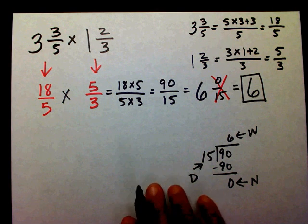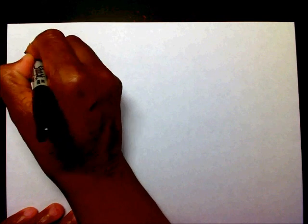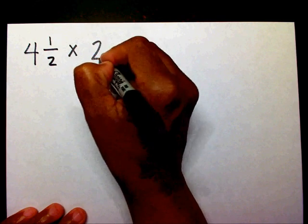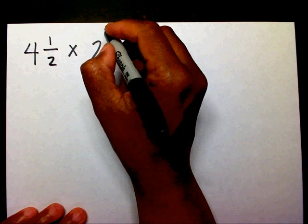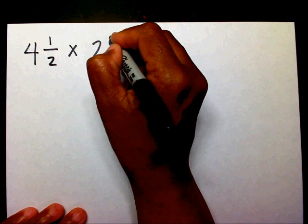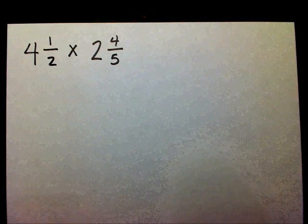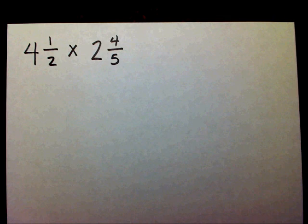I'd like for you to try one now. Four and one-half times two and four-fifths. Please multiply those mixed numbers and I'll freeze the video while you're doing it.